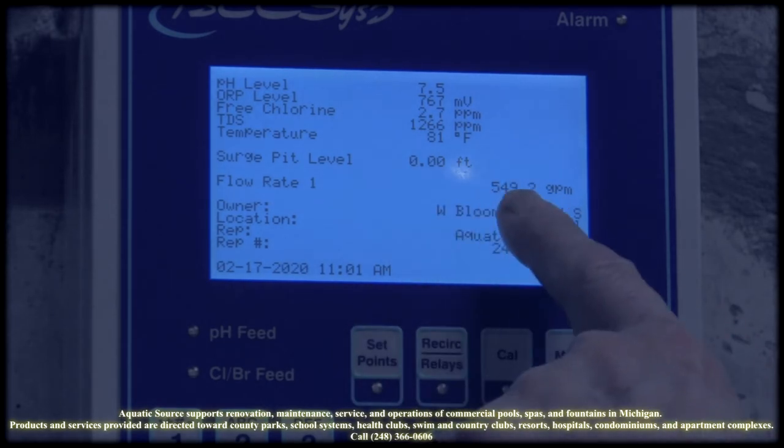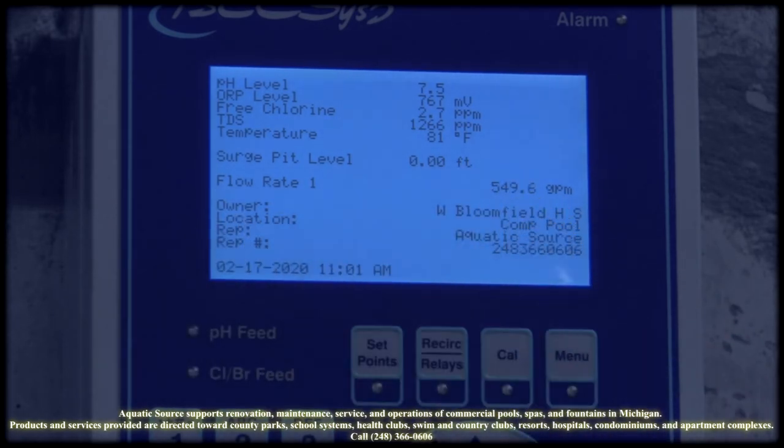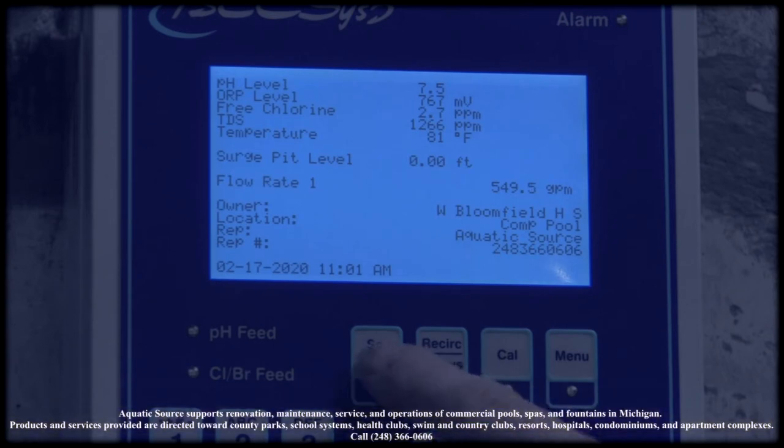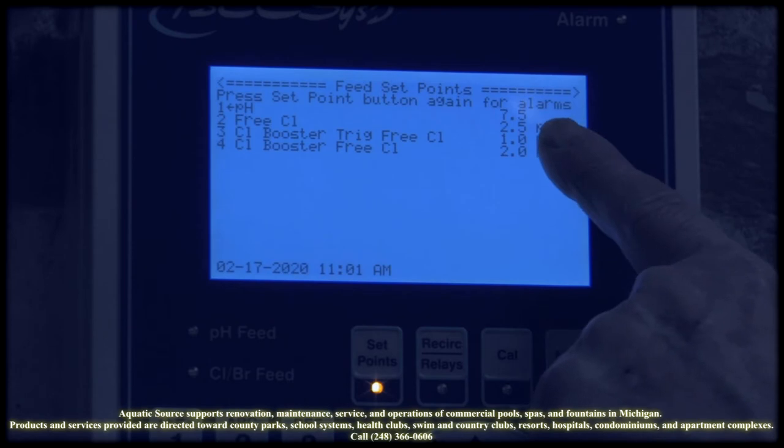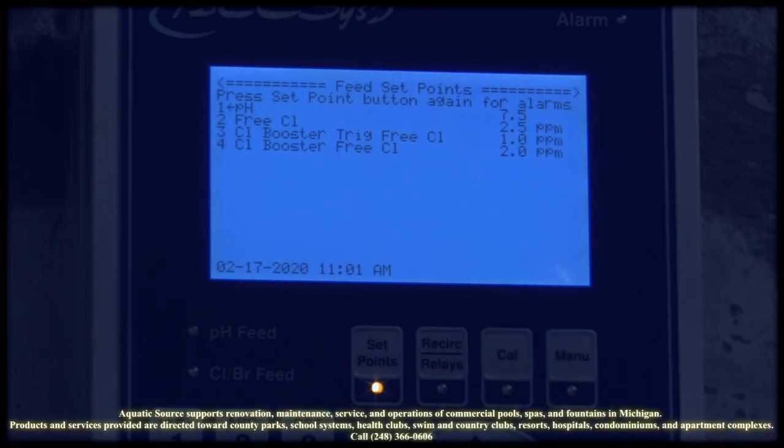We have the flow rate. On this one right here, we can control set points as to where we want to maintain the level. Here, we're maintaining the pH at 7.5. We're maintaining chlorine free available at 2.5.